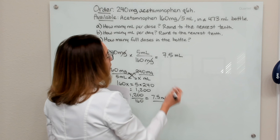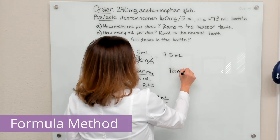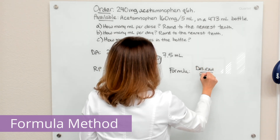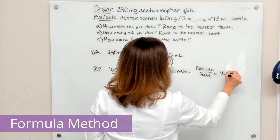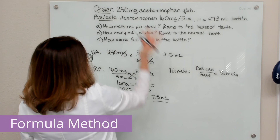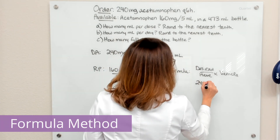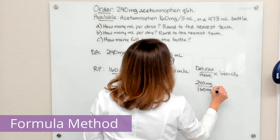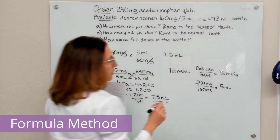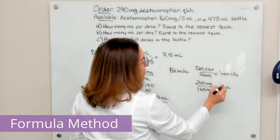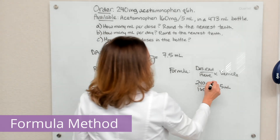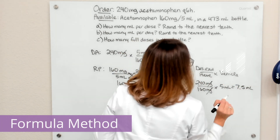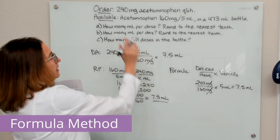With the formula method, we use desired over have times vehicle. We desire 240 milligrams, we have 160 milligrams in 5 ml of solution — that 5 ml is the vehicle. The milligrams cross off, and multiplying this out again gives 7.5 ml. So 7.5 ml is the answer to part A.